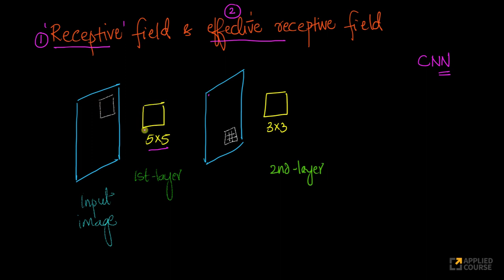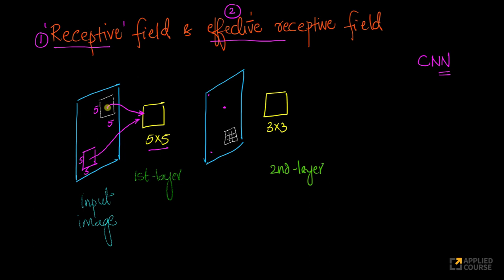At a given point in time, this convolutional kernel will see a 5x5 bunch of pixels in this image. These pixels could be colored or grayscale. If colored, I'll have RGB values in the tensor; otherwise, just grayscale values. So the receptive field of this convolutional kernel at a given time t will be this 5x5 section of the image that is being convoluted using this kernel to generate one value in the output. This 5x5 region will keep changing — at a different point of time, another 5x5 region will be convoluted and another output generated.